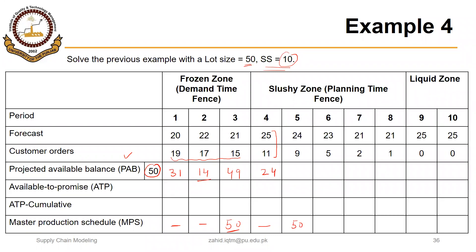So 24 plus 50 minus 24 is 50, so 50 minus the greater of these two — 50 minus 23 is 27. So now the inventory available at the end of period 6 is 27, that is greater than 21, so that is 6, but that 6 is less than 10, which is the safety stock.